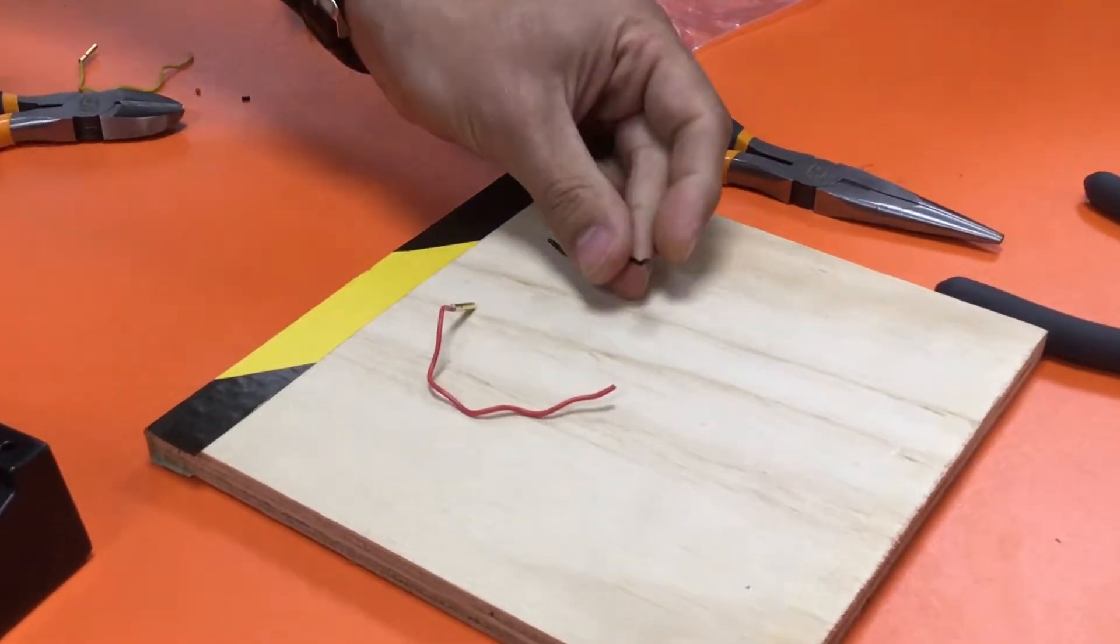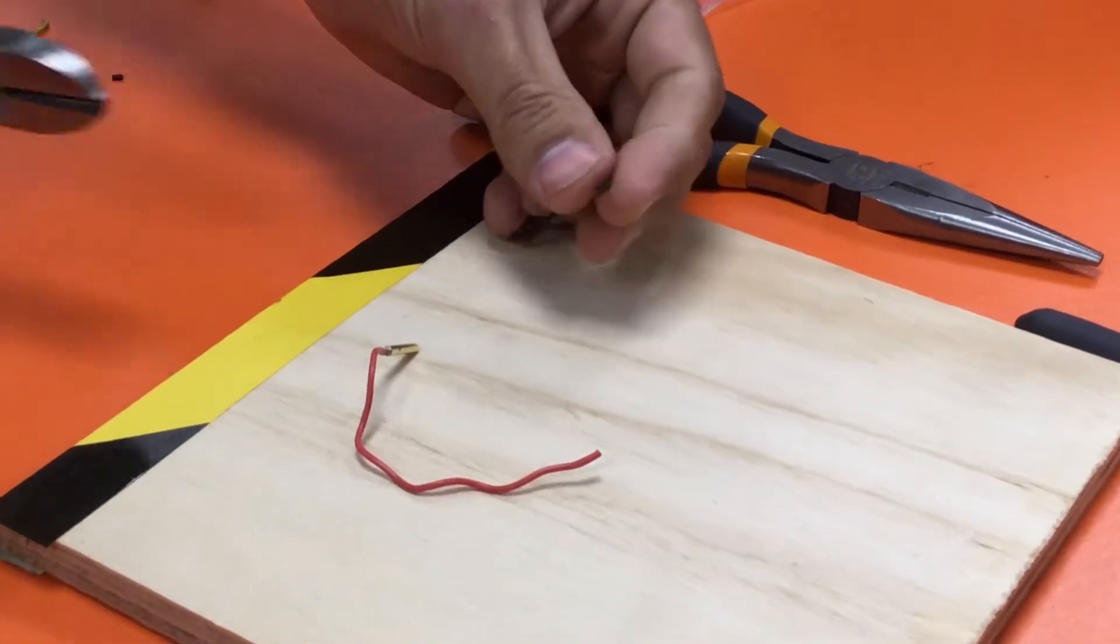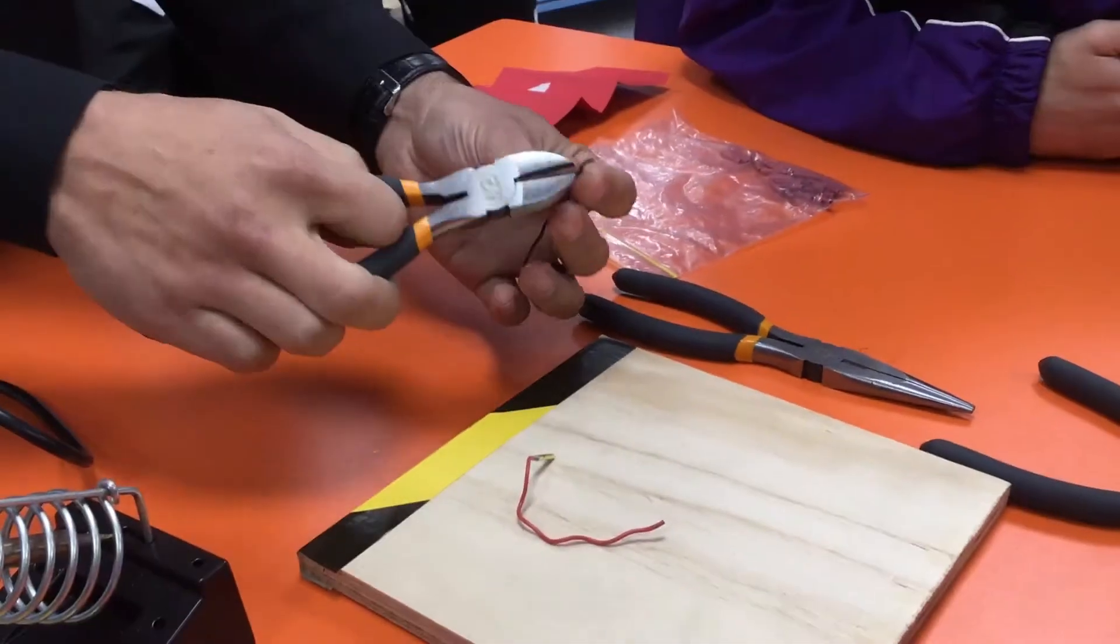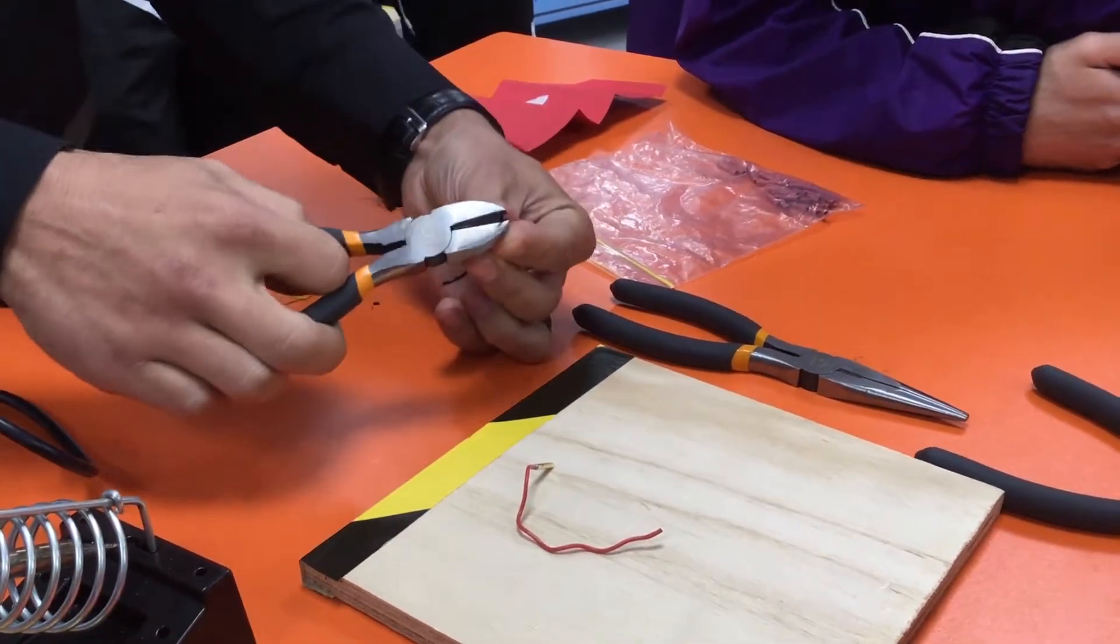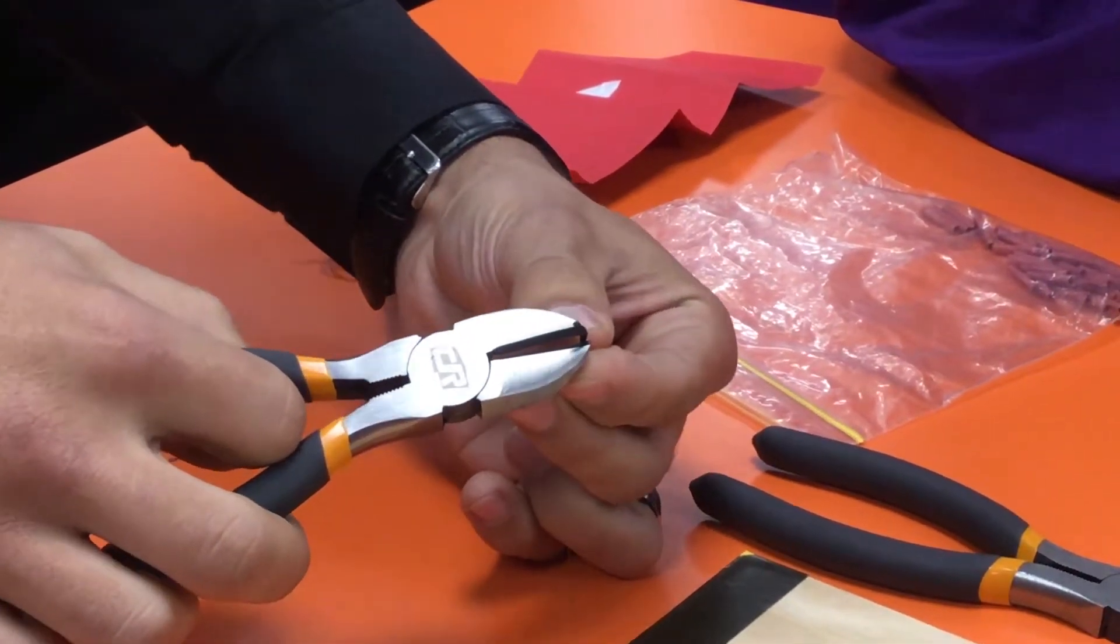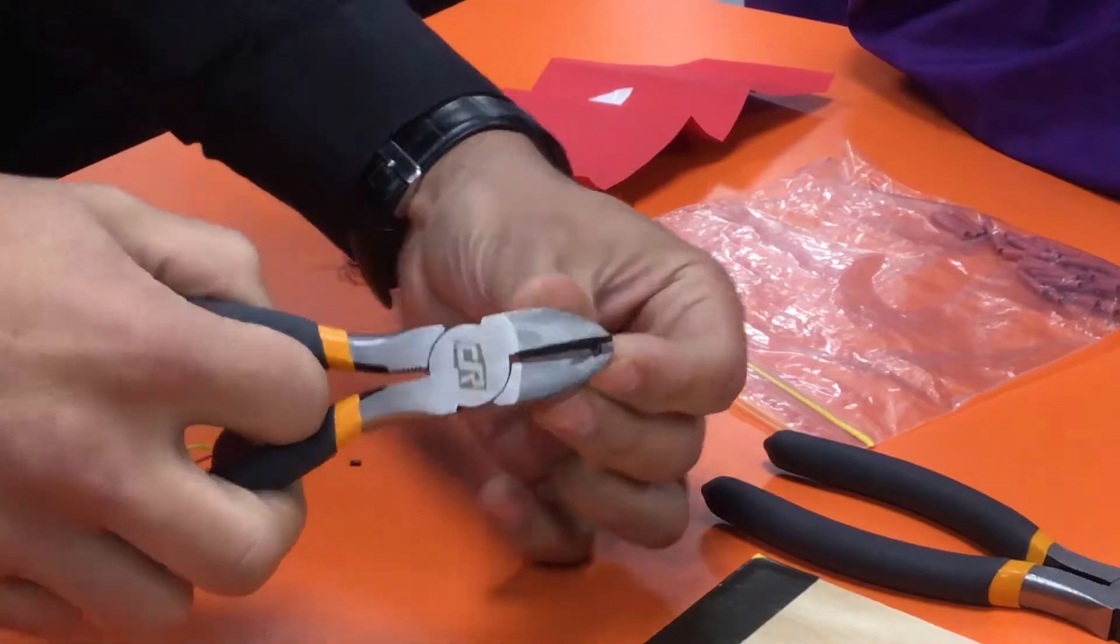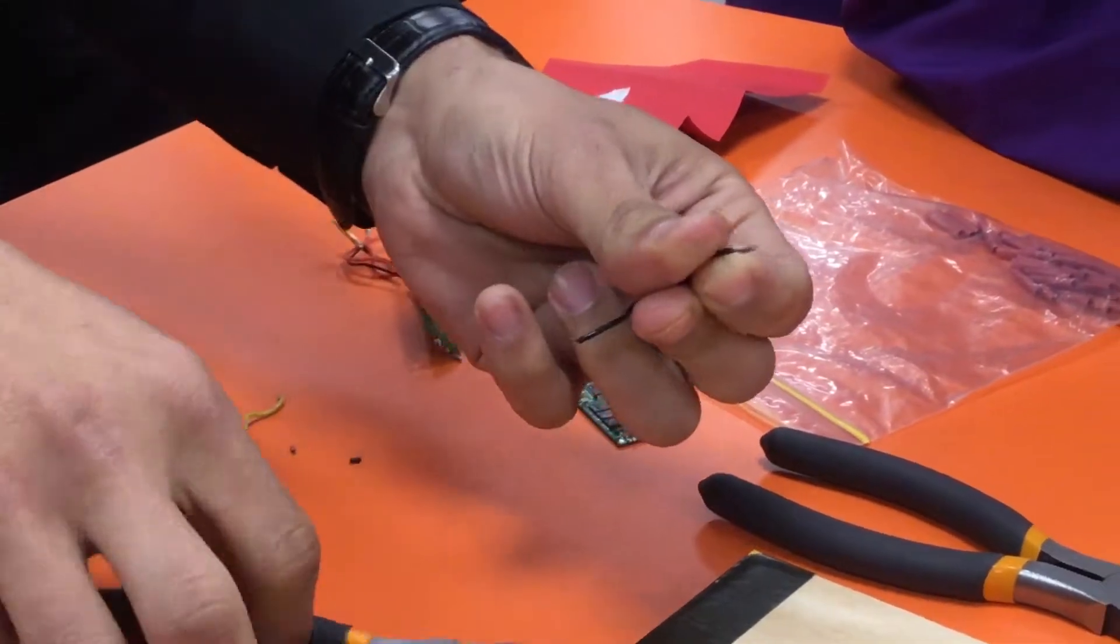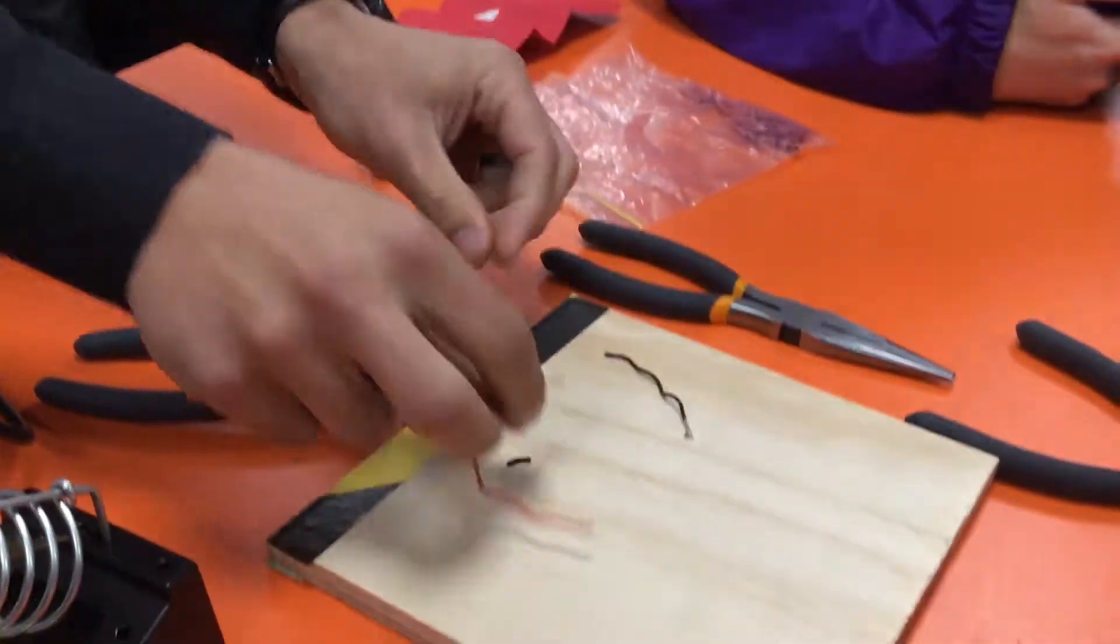Obviously you can't solder the insulation, it just burns and stinks. So you need to use side cuts to strip them. The hard part is you've got to cut through the insulation, not the wire. So I generally cut them a little, rotate and cut again and then pull it off and the wire comes out.